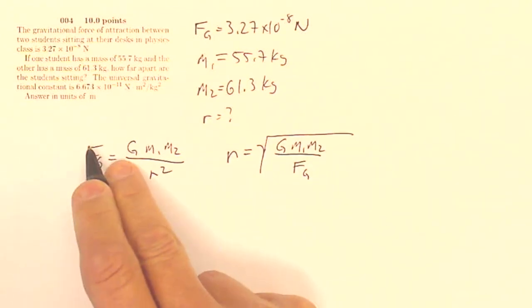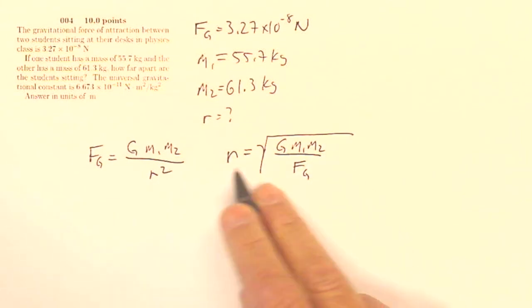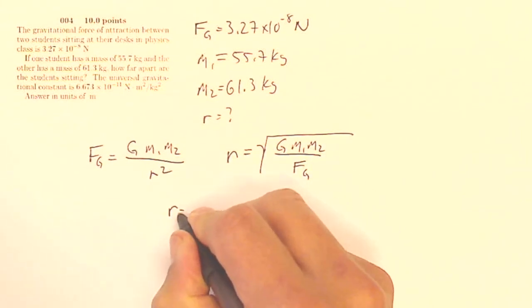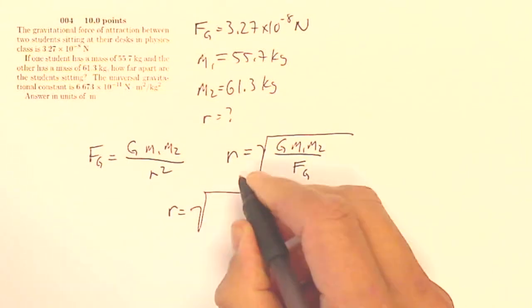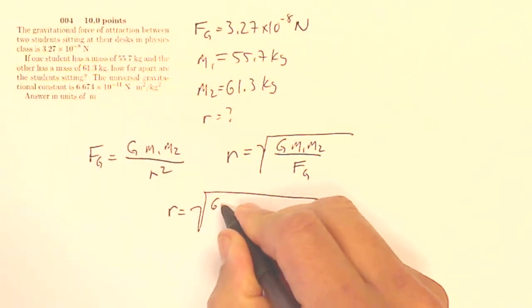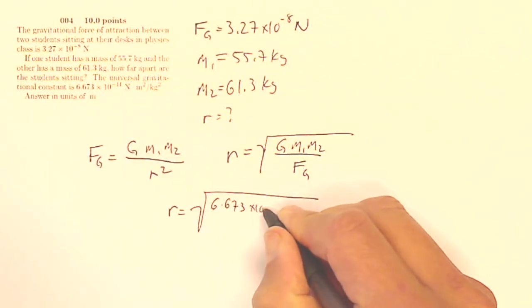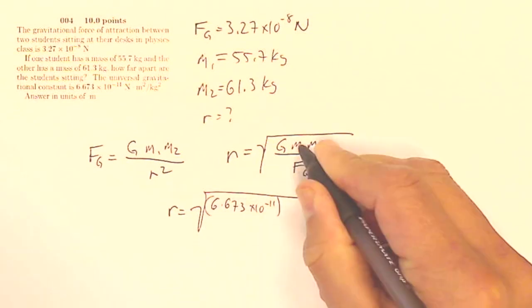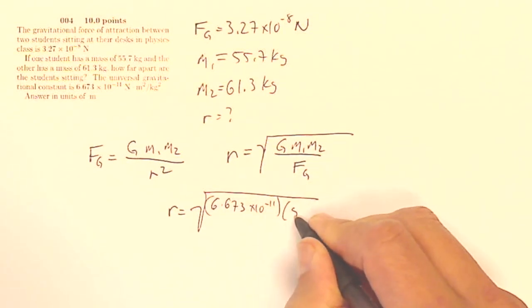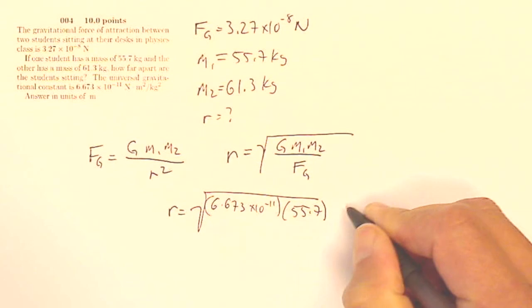So I multiplied by R squared, divided by FG, and then square rooted it to get that. So my R is going to be the square root of G, which is 6.673 times 10 to the minus 11, times the first mass, which is 55.7, times the second mass, which is 61.3,